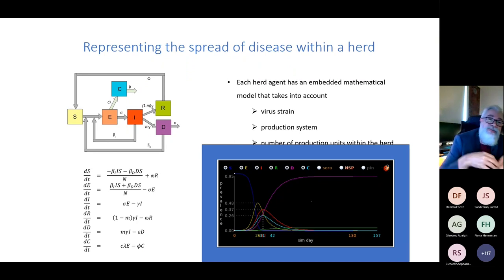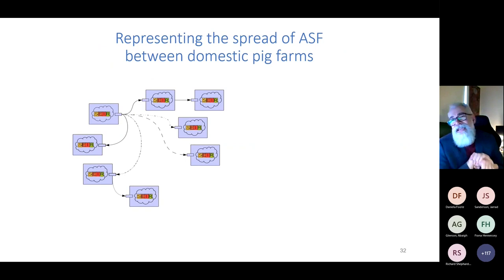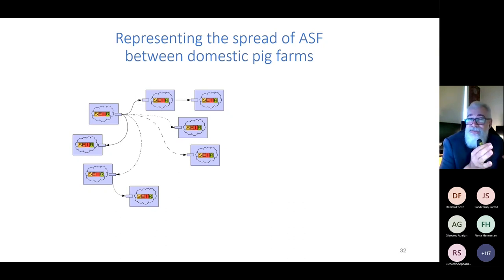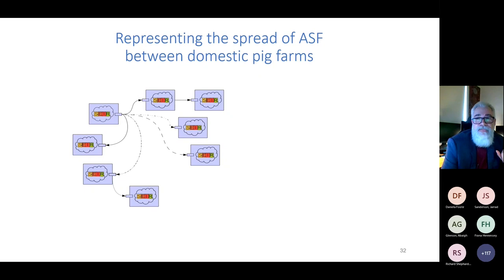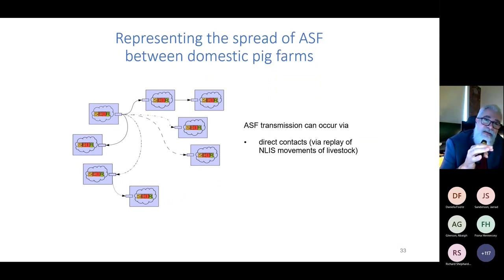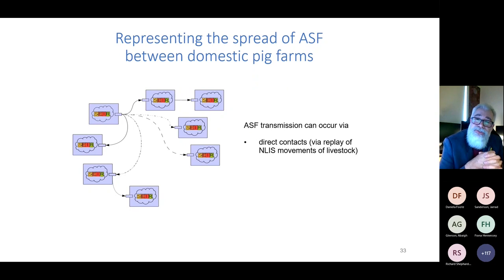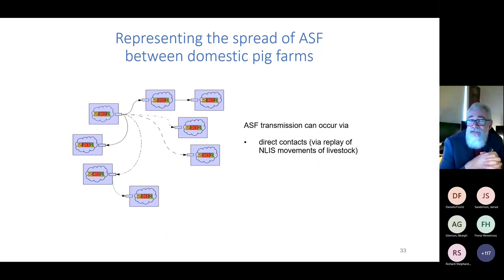We solve the equations numerically and get curves over time projecting what will happen inside that single herd challenged by the virus. These prevalence curves include infected prevalence, infectious prevalence, clinical prevalence, recovered prevalence, deceased prevalence, serological prevalence, and we can also simulate lactogenic prevalence where we detect antibodies in milk. It's these curves that are exported and made visible to the rest of the world in our agent-based model.